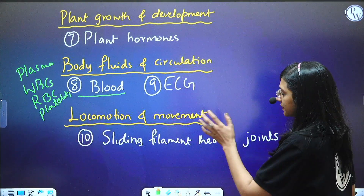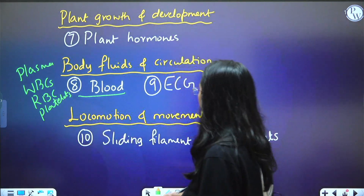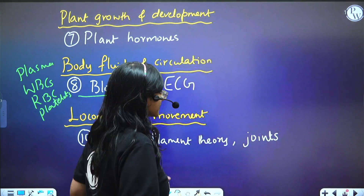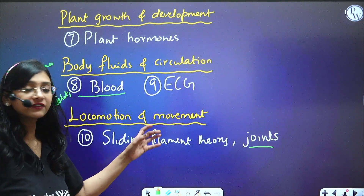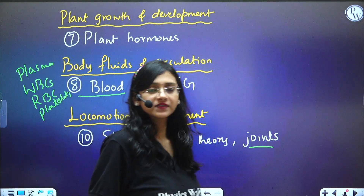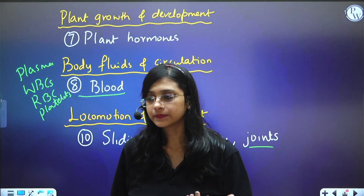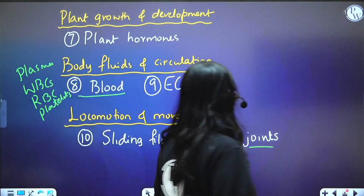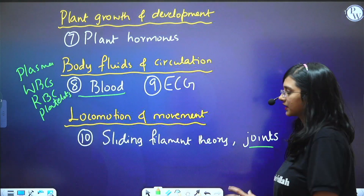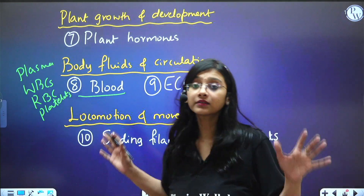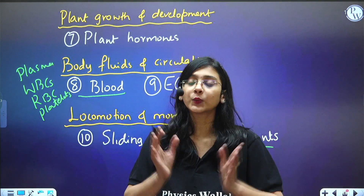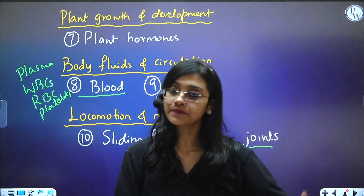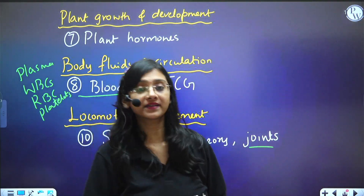From the Locomotion and Movement chapter, questions are asked from the joints and sometimes from the sliding filament theory — about meromyosin, troponin, and tropomyosin. Questions related to such things will be asked. This is the 10th topic you must know for NEET 2024, and we are now done with the Class 11 biology topics.